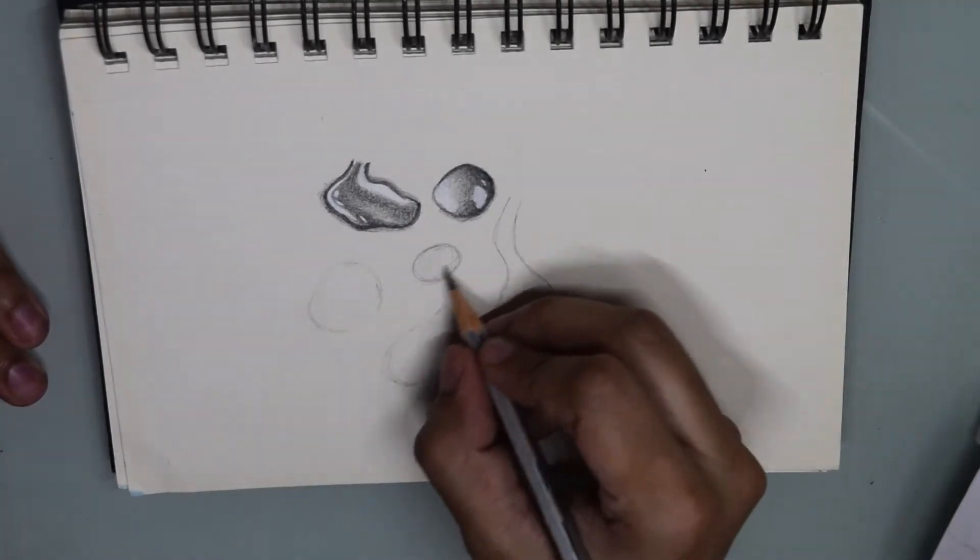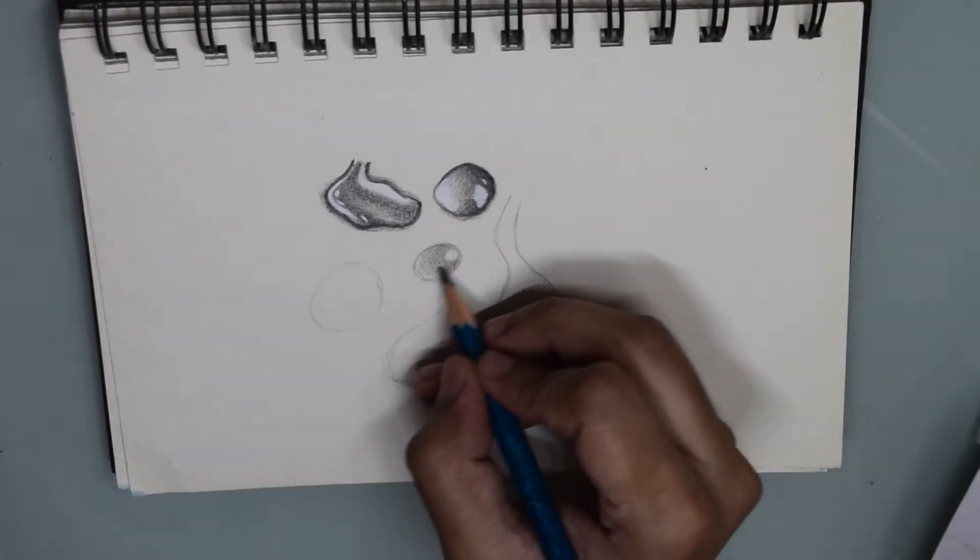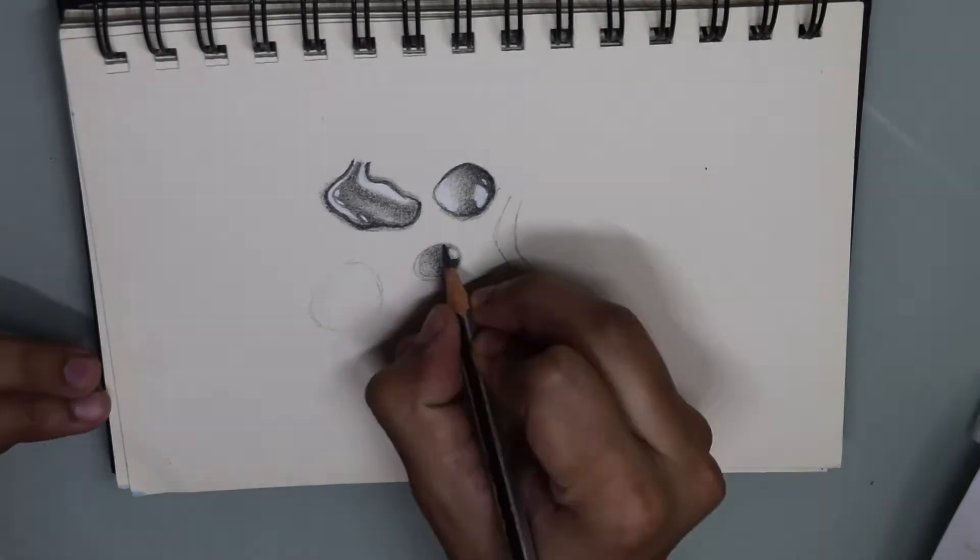Next with a 4B pencil, I darken the shadows. The shadow will be opposite to the direction from which light will be hitting the water drop.